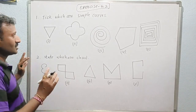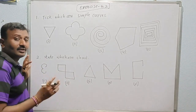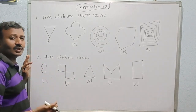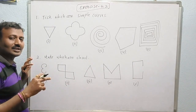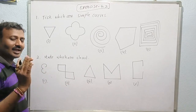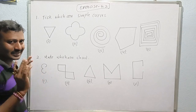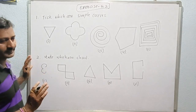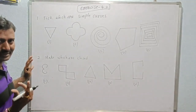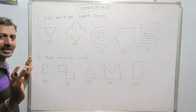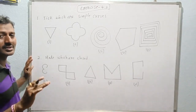A simple curve is one which should be closed, and while closing, the lines should not intersect itself. Where intersecting has occurred, those are not simple curves.